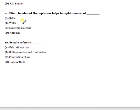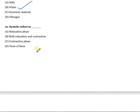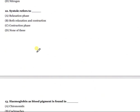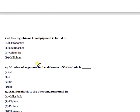Question 11: The filter chamber of Homopterans helps in the rapid removal of which substance? The right answer is water. Question 12: Systole refers to which of the following? The correct answer is the contraction phase. This is an important question — systole refers to the contraction phase.